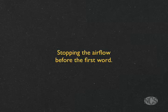Stopping the airflow before the first word is another mistake. Remember, the airflow must smoothly transition into the first word — it is a river of air. Here the young woman is stopping the airflow; she's actually closing her mouth. Examples: Do you know what time it is? Where are my keys? I want to go to the store.